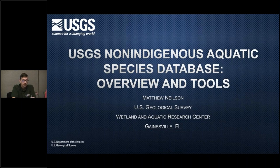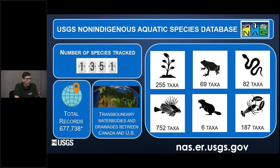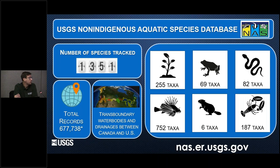I'm here to talk about the NAS database and some of the tools that we've been able to develop using funding through the Fish and Wildlife Service Small Grants Program over the last five or six years. A brief overview about the database: we are the central federal repository for information on non-indigenous aquatic species data. We've been around since the late 1980s, and with the Non-Indigenous Aquatic Species Prevention and Control Act in 1990, came the first genesis of the database.